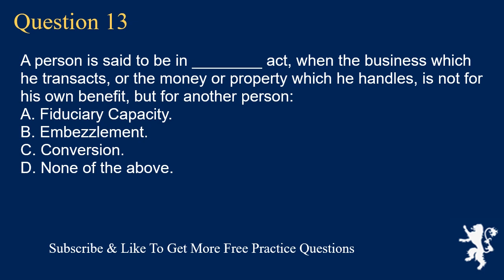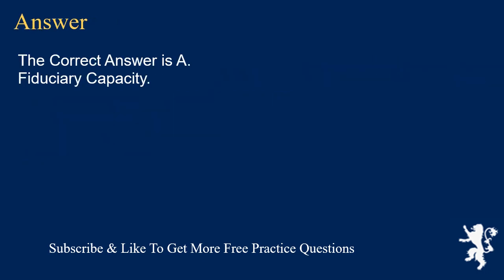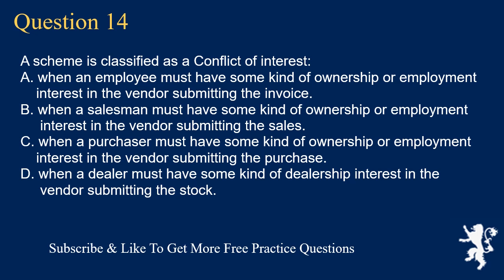Question 13: A person is said to act in an underscore capacity when the business which he transacts, or the money or property which he handles, is not for his own benefit, but for another person. A. Fiduciary capacity. B. Embezzlement. C. Conversion. D. None of the above. The correct answer is A. Fiduciary capacity.